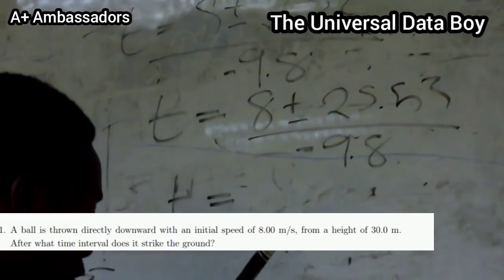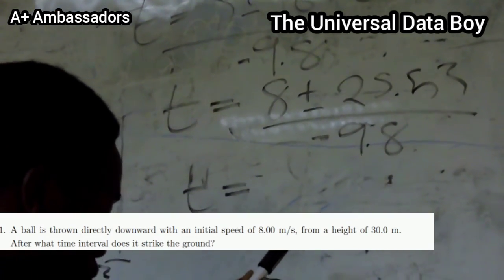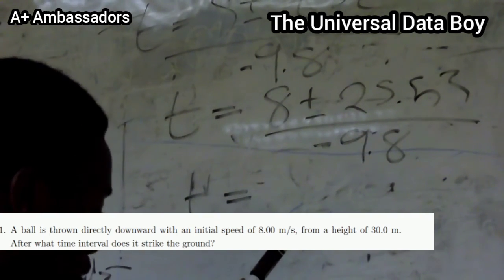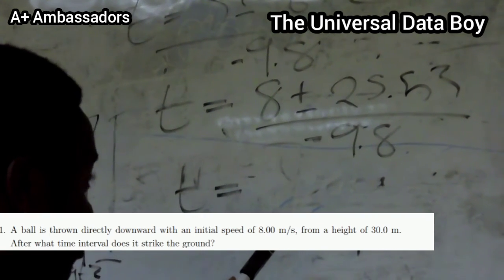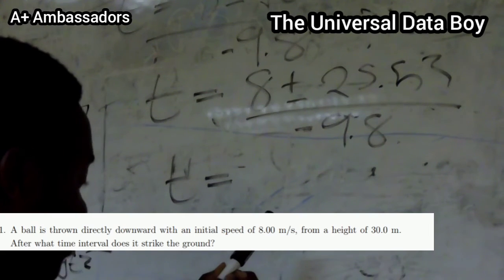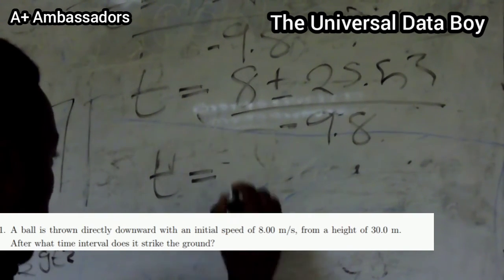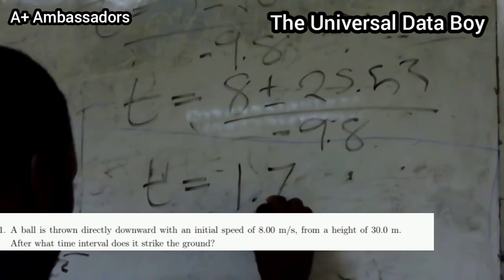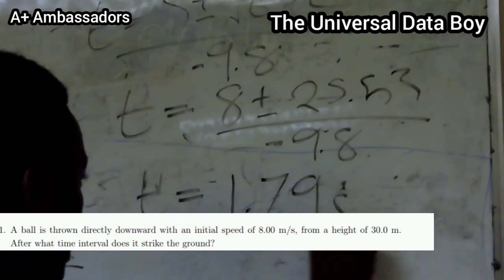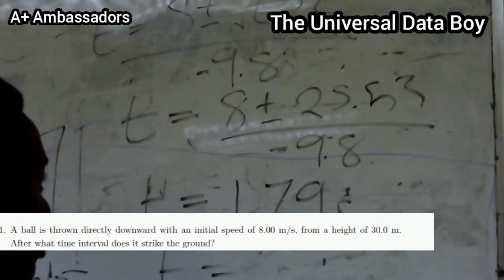If we use the negative, we have (8 - 25.53) / -9.8, then we have 1.79 seconds.